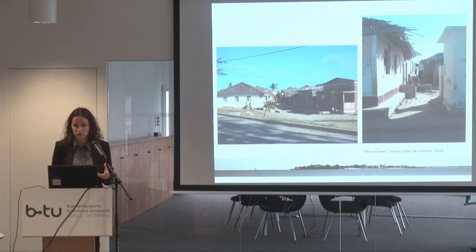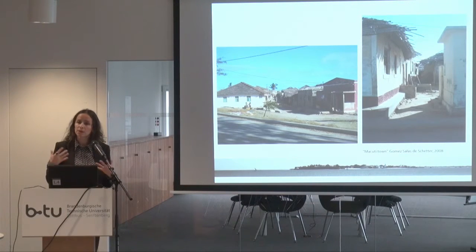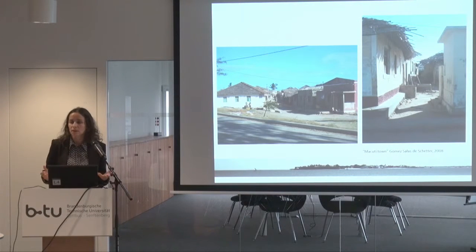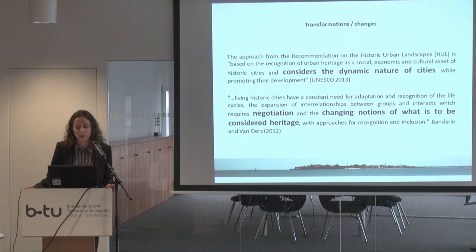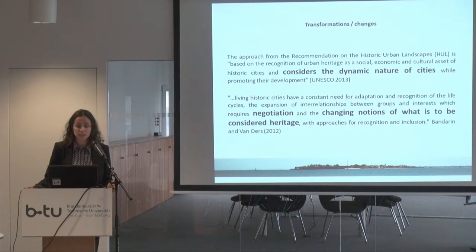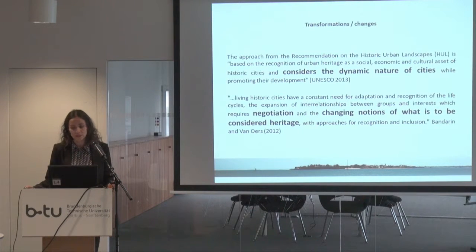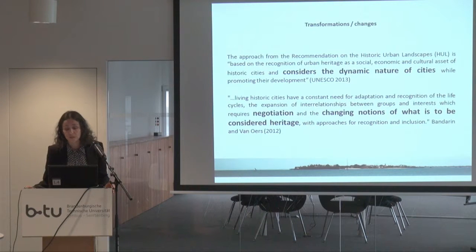Many changes have been introduced — for example, some houses still have some of the roofs, but the walls are now changed to cement blocks, which is not sustainable architecture. There is the approach from the Recommendation on the Historic Urban Landscape, which is based on the recognition of urban heritage as a social, economic, and cultural asset of historic cities, considering the dynamic nature of cities while promoting their development. Living in historic cities requires constant adaptation, recognition of life cycles, negotiation over the expansion of interrelationships between groups and interests, and changing notions of what is to be considered heritage.